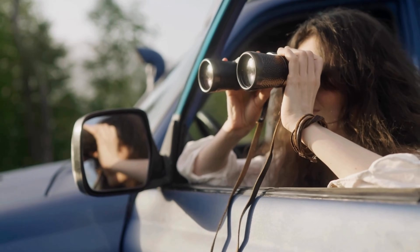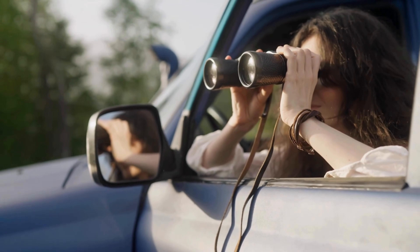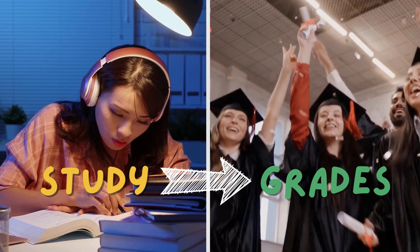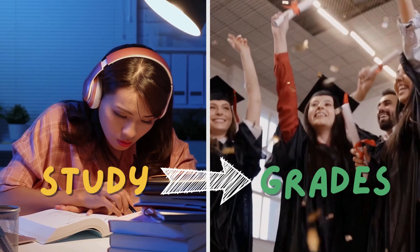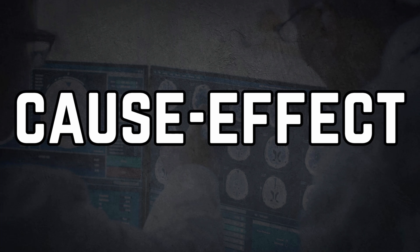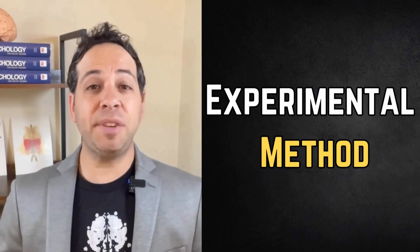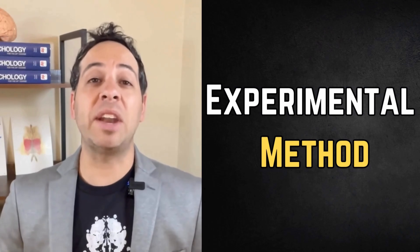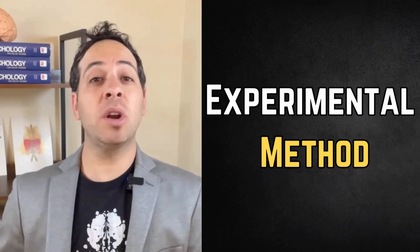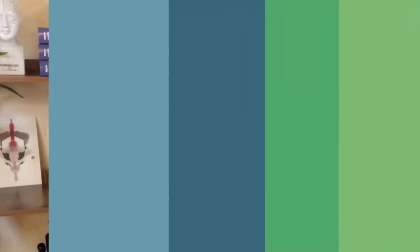Some methods help psychologists observe and describe behavior; others reveal patterns or relationships. But if you want to prove cause and effect, one method stands above the rest: the experimental method. In this video, we'll break down how experiments work and why they matter. So if you're ready, grab your notes, fire up those neurons, let's jump in.